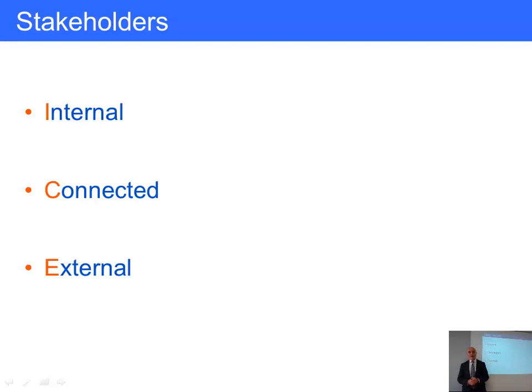You then have connected stakeholders, and connected stakeholders are - think of them as connected by way of a contract. So a connected stakeholder could be a supplier, could be a customer, could be a lender. So you have a formal relationship with them, but you're obviously not part of that organization - connected.